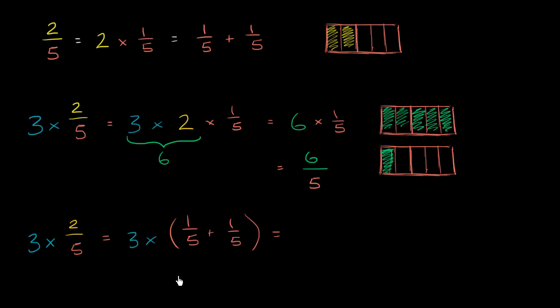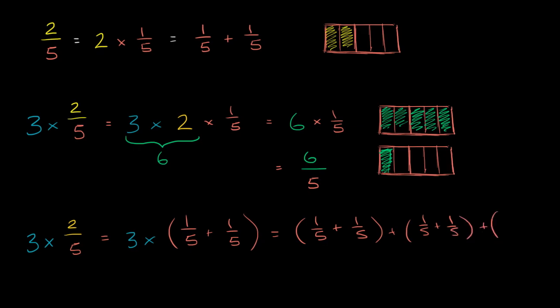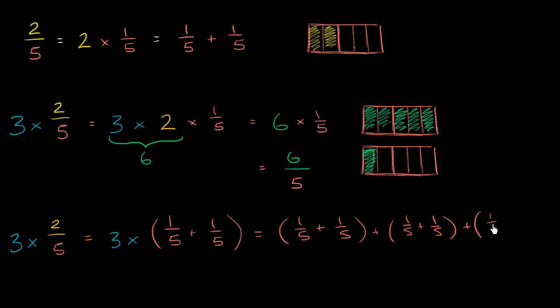Which would be equal to, well, I just have to have, literally, three of these added together. So it's going to be 1/5 plus 1/5 plus 1/5 plus, I think you get the idea here, plus 1/5 plus 1/5. Well, what's this going to be?